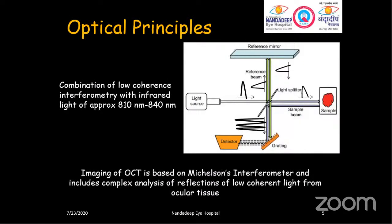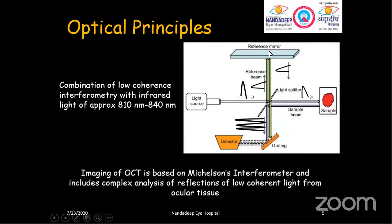Optical coherence tomography is based on the Michelson interferometer principle. Here in this image you can see a light source, a beam splitter, a reference mirror, a sample — the retinal area of interest — and a photodetector. What the Michelson interferometer does is it uses a beam splitter, where the light source is split into two arms. Each beam is reflected back toward the beam splitter, which combines the amplitudes into a resulting interference pattern that is directed toward the photodetector as an image for analysis.